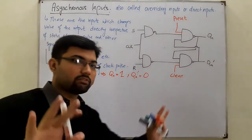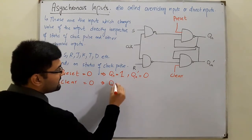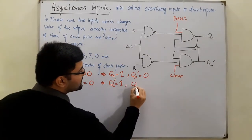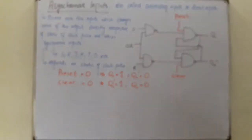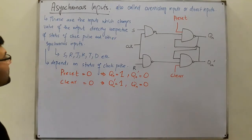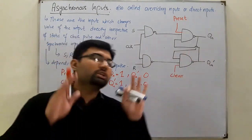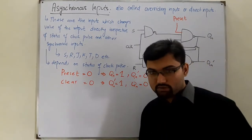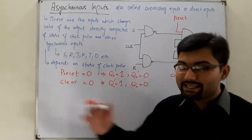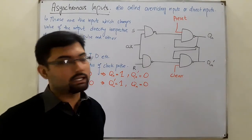This implies Q_n complement would be zero, because they are complements of each other. Now if clear is zero, the NAND gate output makes Q_n complement equal to one, which means Q_n has to be zero. This happens irrespective of the clock pulse. If preset is zero, Q_n has to be one. If clear is zero, Q_n has to be zero — regardless of the clock value, the value of J, K, S, R, D, or T. Whatever the values of the synchronous inputs and the clock pulse, the output changes directly when these signals are applied.